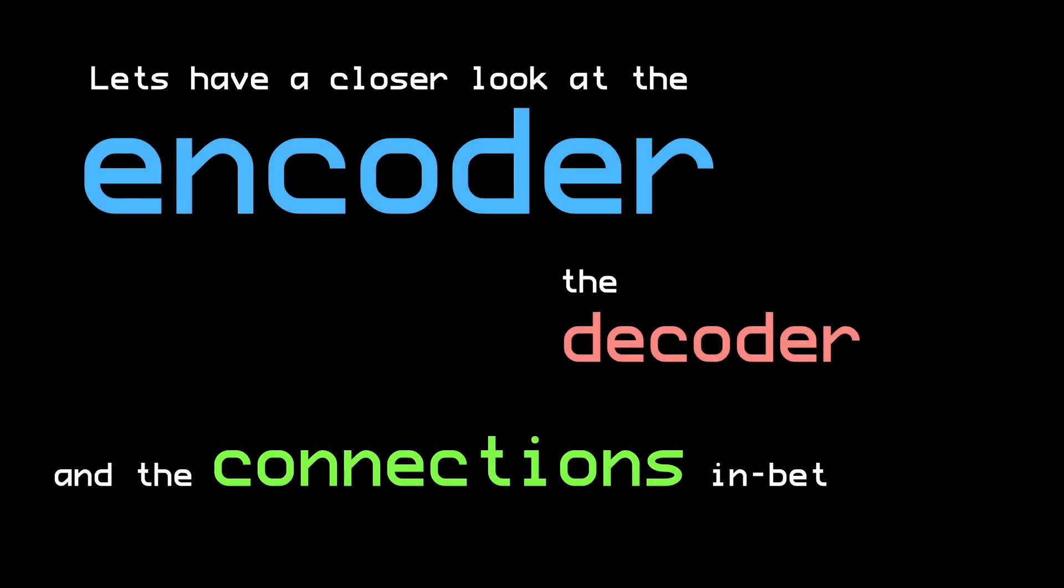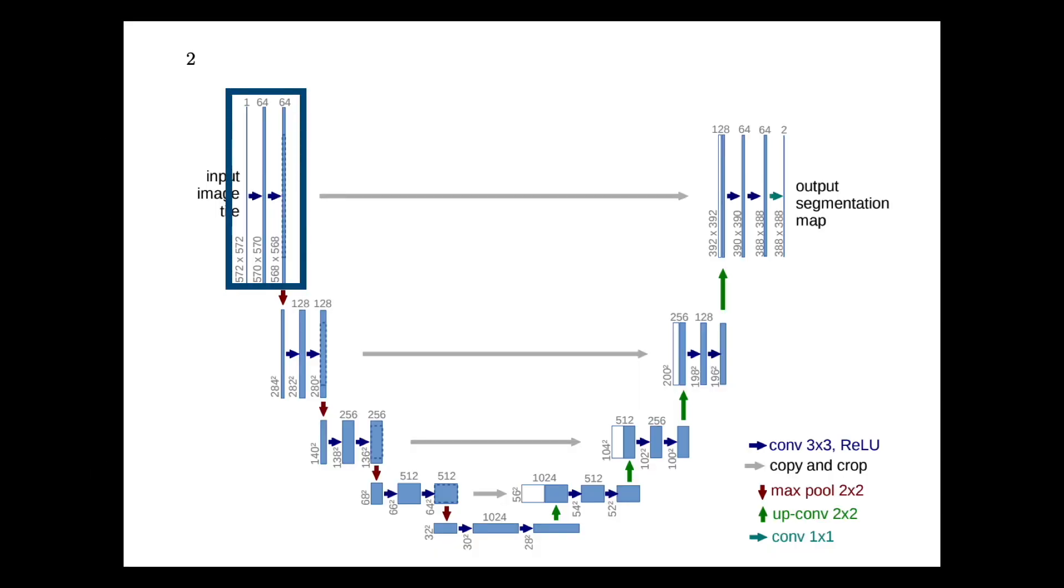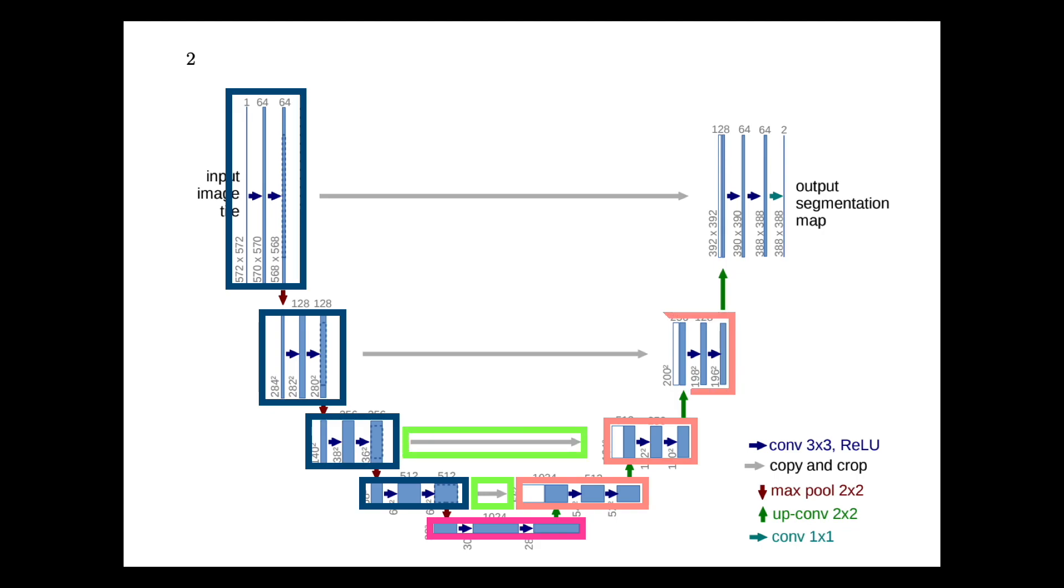Let's have a closer look at the encoder, the decoder, and the connections in between them based upon the original paper. Features are passed through an encoder consisting of repeated convolutional layers and max pooling layers that extract intermediate features. These extracted features are then upsampled by a corresponding decoder, where saved copies of the encoder's features are concatenated onto the decoder's features via connecting paths.